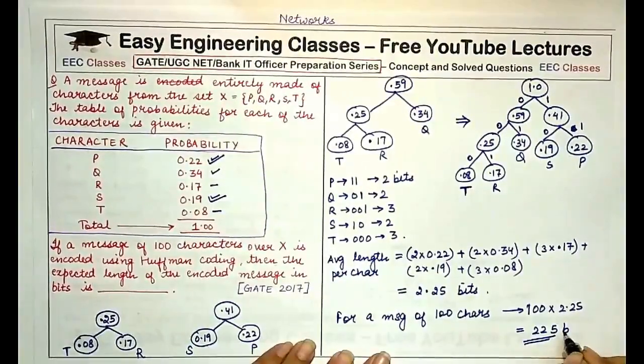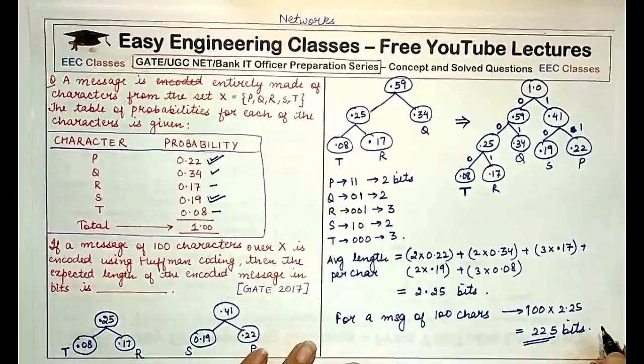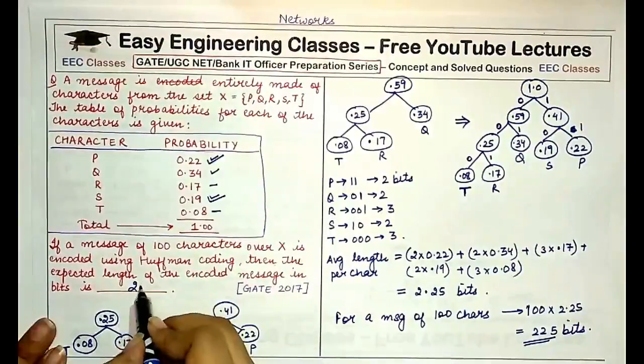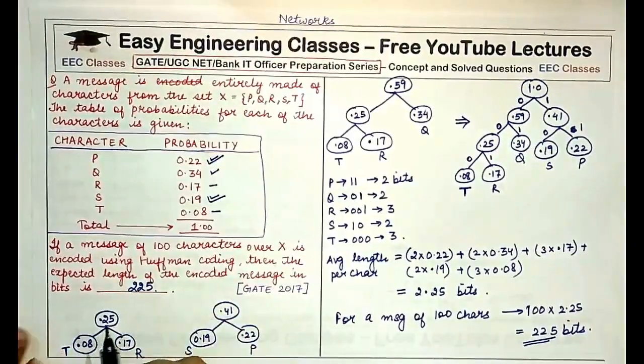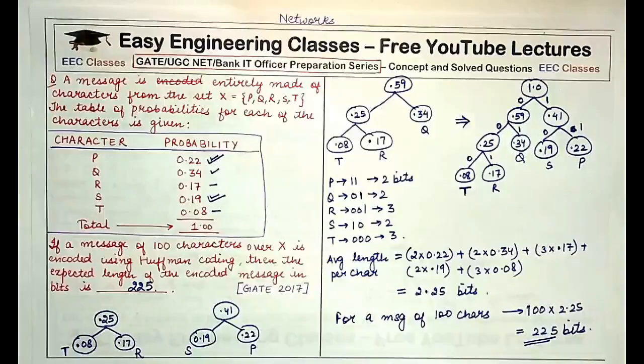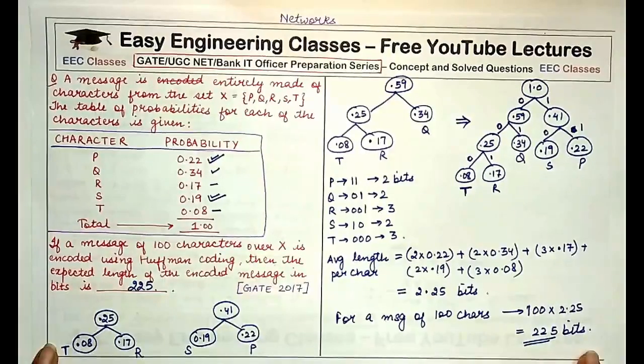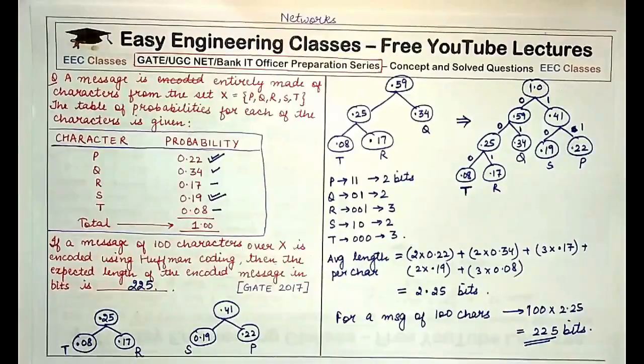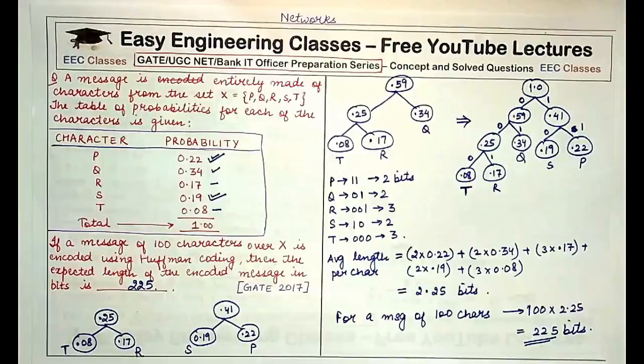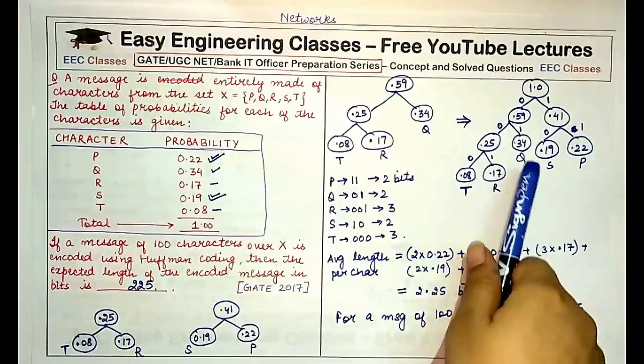So this was a type of question that does not provide you with the options. You directly have to calculate and find out the answer. This generally comes in 2 mark questions in GATE exams or 2 mark questions in UGC NET exams. So this was the concept of Huffman coding. I hope you understood this question and don't make mistakes while forming this tree.